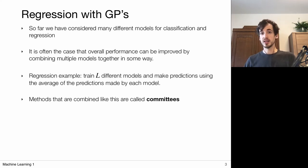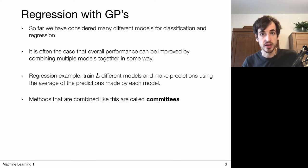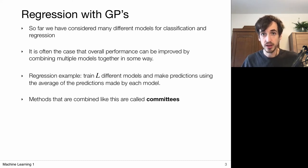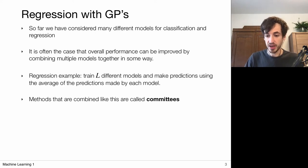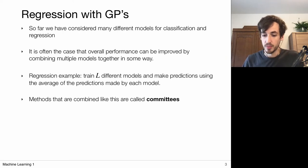So far we have considered many different models for classification and regression. The overall performance of your method can often be improved simply by combining multiple models in a particular way. If one method works well and another also works well, combining them may lead to an even better system. This is what you actually see in the rankings on Kaggle — these machine learning challenges are typically won by methods that apply some form of combination of expert systems.